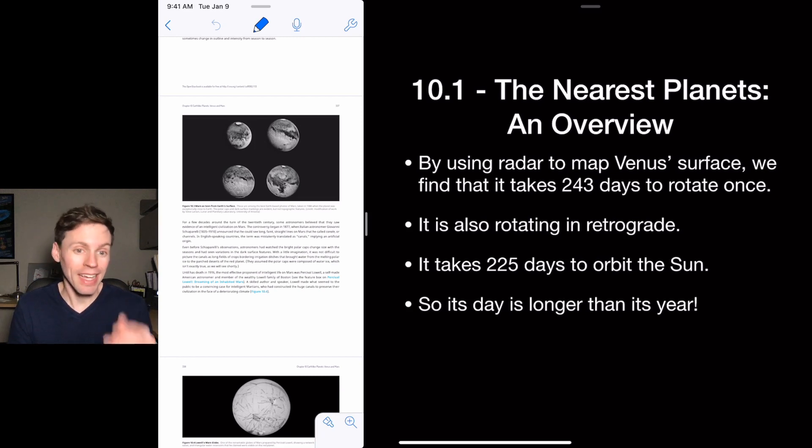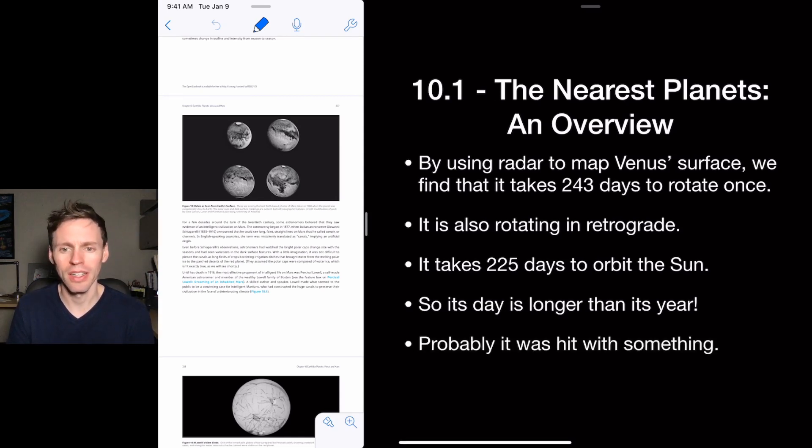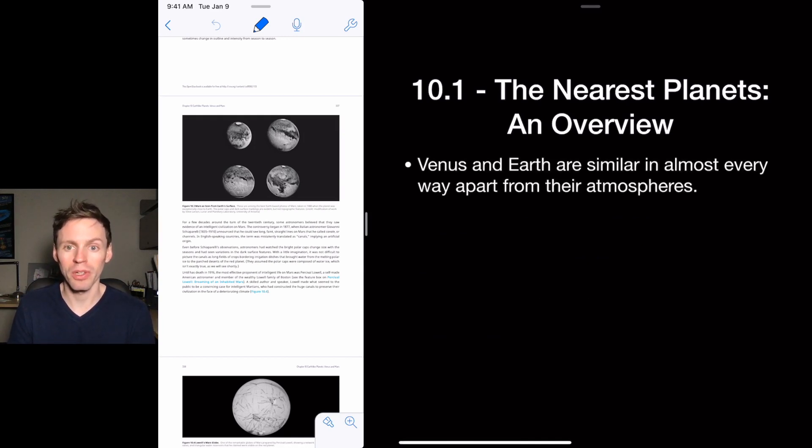So its day, 243 Earth days to have one rotation is longer than its year. It takes longer for it to rotate than it does to go around the Sun. That's crazy. Probably it was hit with something which caused it to have this orbit.